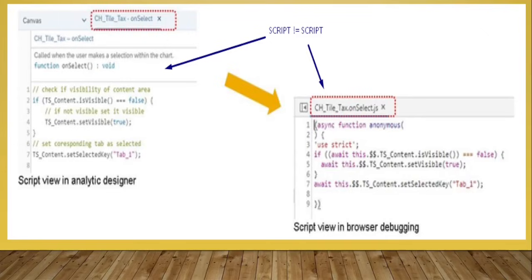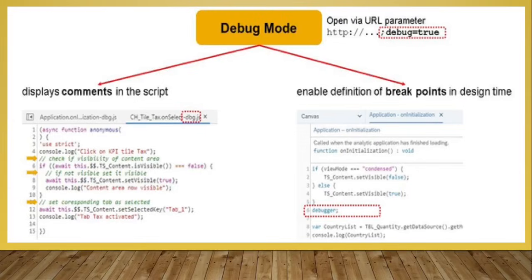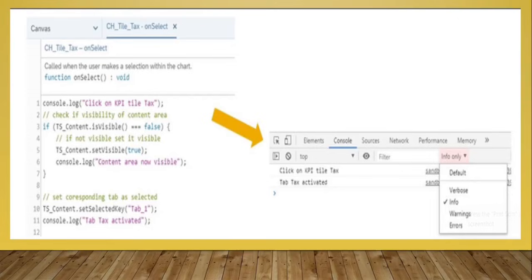After that, we will learn about the differences between the script as it appears in Analytics Designer and what the result looks like in the browser debugging view when we run the debugging. We will understand how we can place a debugger in the application so that when we execute the application, the debugger will help us to rectify or resolve the issue.